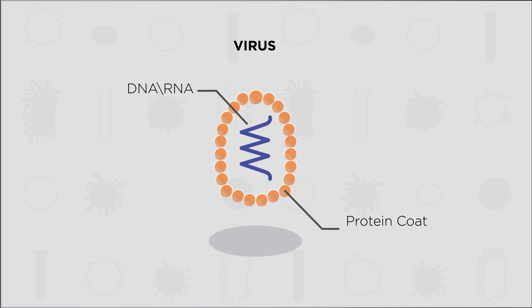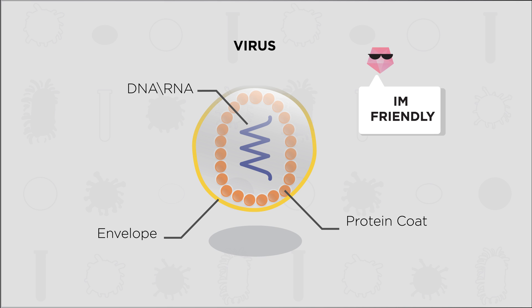Sometimes a membrane called an envelope surrounds a virus particle. This envelope isn't made by the virus, but is actually stolen from the membrane of the host cell. This is a great strategy by the virus — it makes it harder for the host cell to identify the virus as foreign.